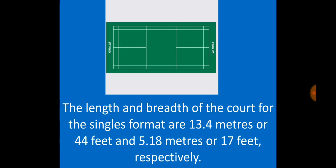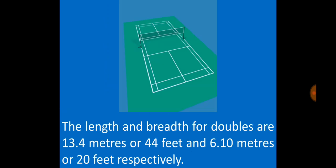For the singles format, the length and breadth of the court are 13.4 meters (44 feet) and 5.18 meters (17 feet) respectively. For the doubles format, the length and breadth are 13.4 meters (44 feet) and 6.10 meters (20 feet) respectively.